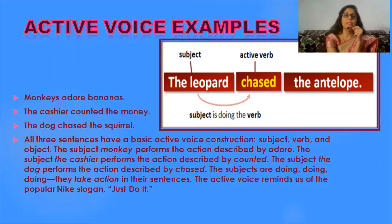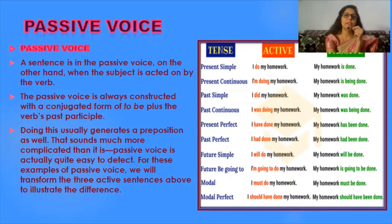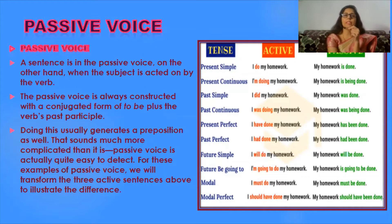The active voice reminds us of the popular slogan 'Just do it' — the person who is the doer of the action is doing the action, and that makes it active voice. In passive voice, on the other hand, the subject is acted on by the verb. For example, 'My homework is done' — here, who has done the homework is not specified; the subject is not active in the sentence, which is why it is a passive example.